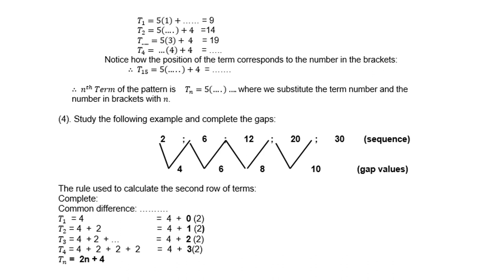Notice how the position of the term corresponds to the number multiplied by 5. So we need to find the nth term — for example, term 14 would be 5×14 + 4. The nth term of the pattern is therefore tn = 5n + 4, where n is the position of the term.